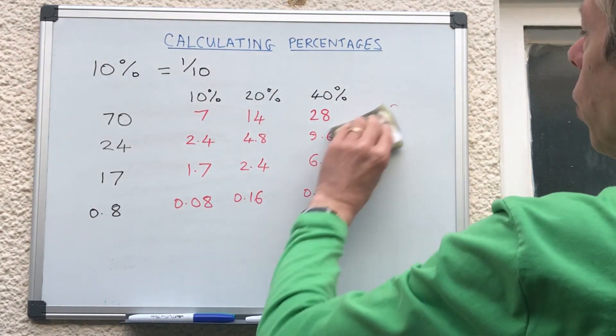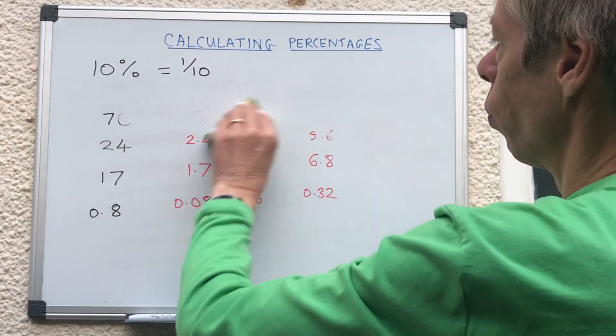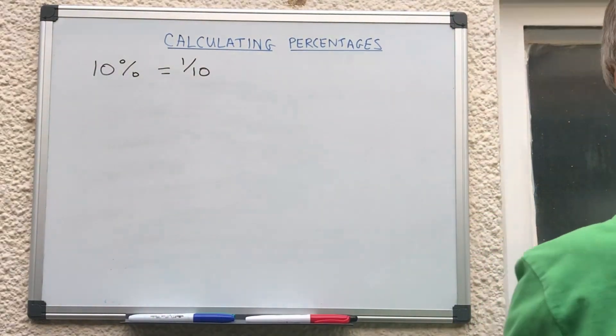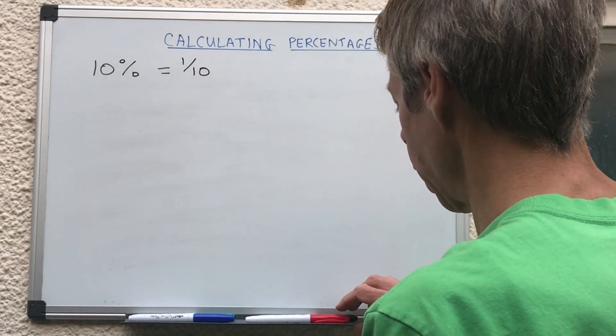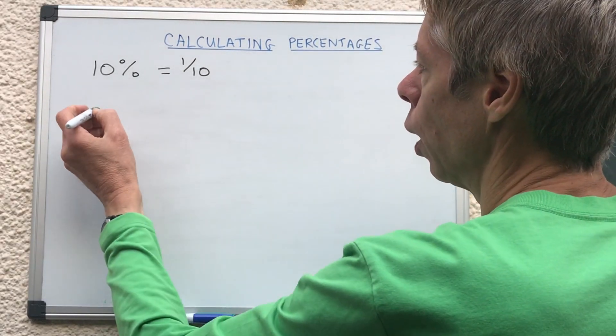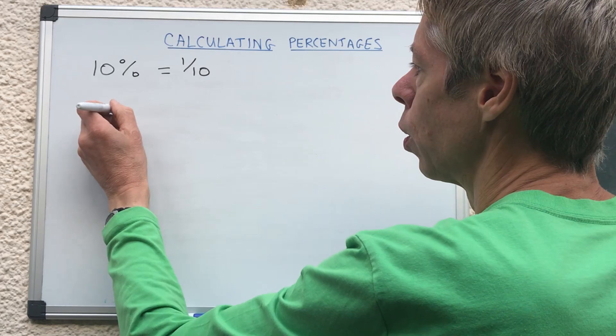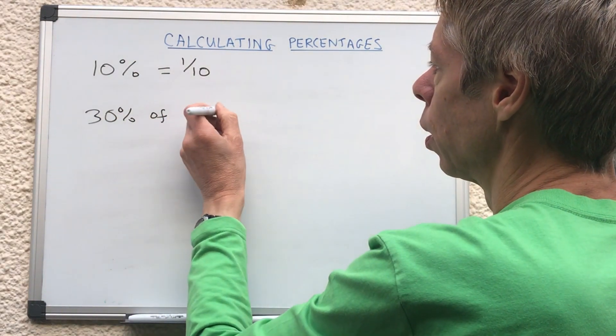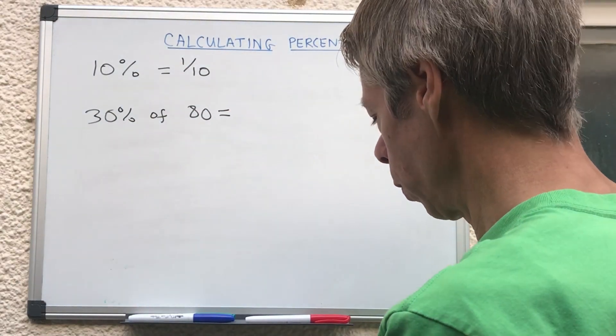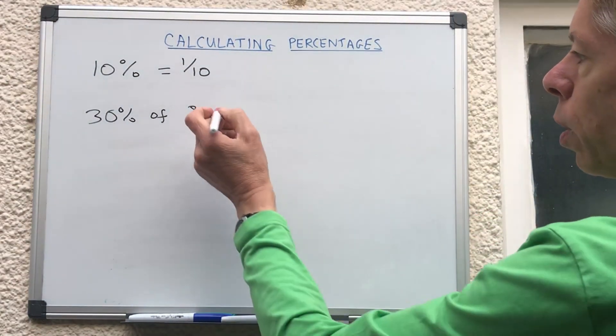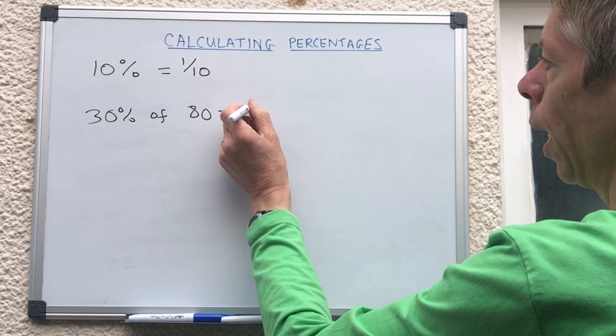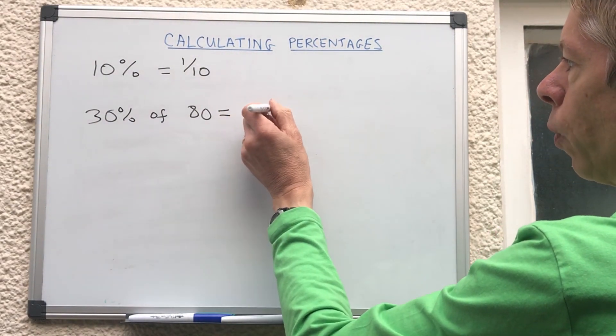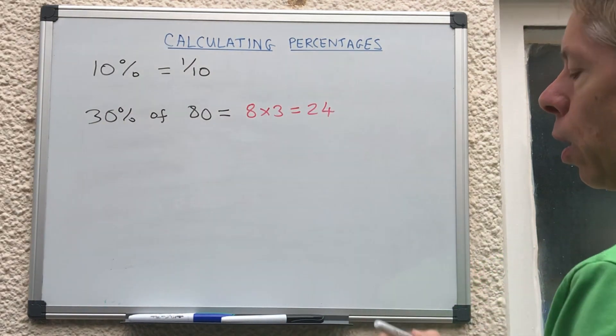Let's just look at a few other calculations using the same technique but with different percentages. Let's work out 30 percent of 80. So all we've got to do is work out 10 percent which is divided by 10 to give us 8, and then to get 30 percent we times it by 3 so that will give us 24.